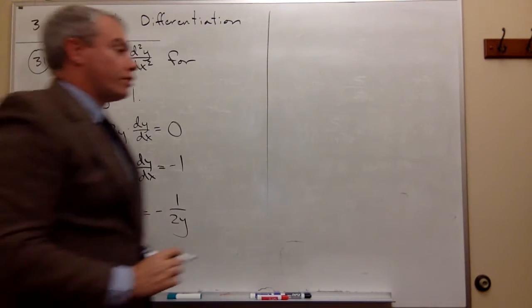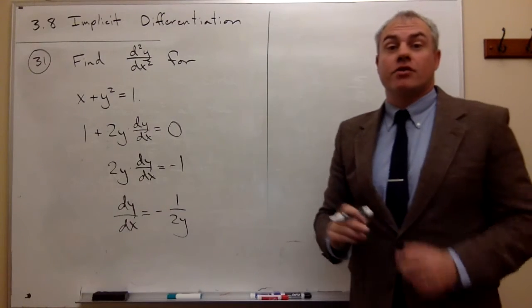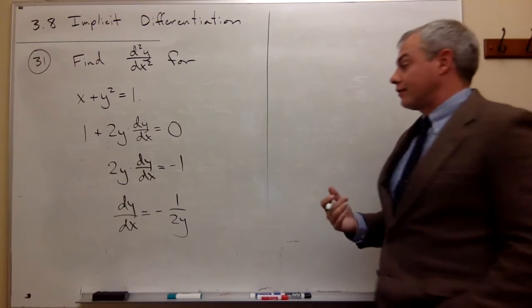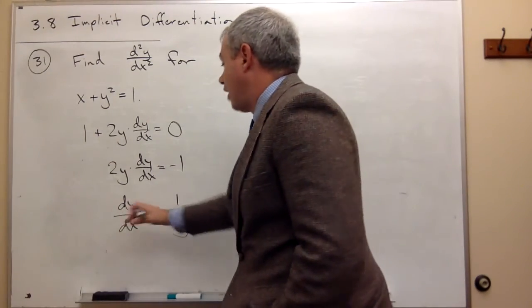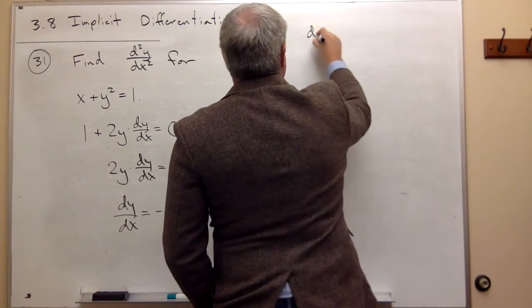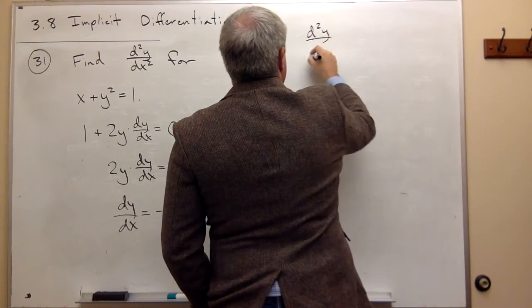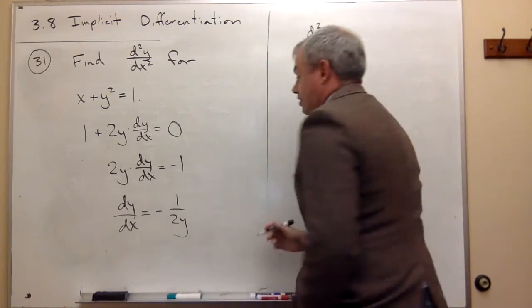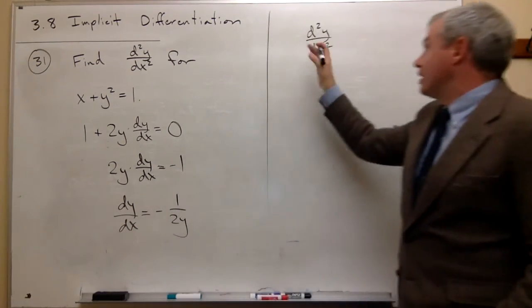All right, I have the first derivative. Now that I have the first derivative, I'm able to take the second derivative. So the derivative of dy dx is d squared y over dx squared. In other words, the derivative of the first derivative is the second derivative. And so I need to take the derivative of this side.